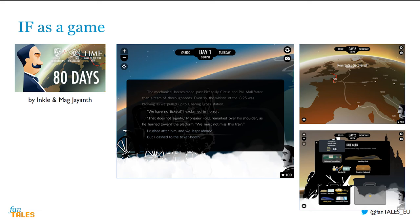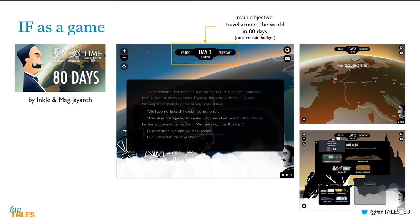Works of interactive fiction can also be very much like games, like the award-winning 80 Days. This is an anti-colonial retelling of the original story by Jules Verne, Around the World in 80 Days. One of the distinguishing features of games is that they have goals or objectives, and that you can win or lose. In 80 Days, your main objective is, not surprisingly, to travel around the world in 80 days on a certain budget. If you meet this objective, you win; if not, you lose, but you can still have a lot of fun exploring the story and its world. This objective gives a very concrete purpose to the story that you are reading and the choices that you make in it.